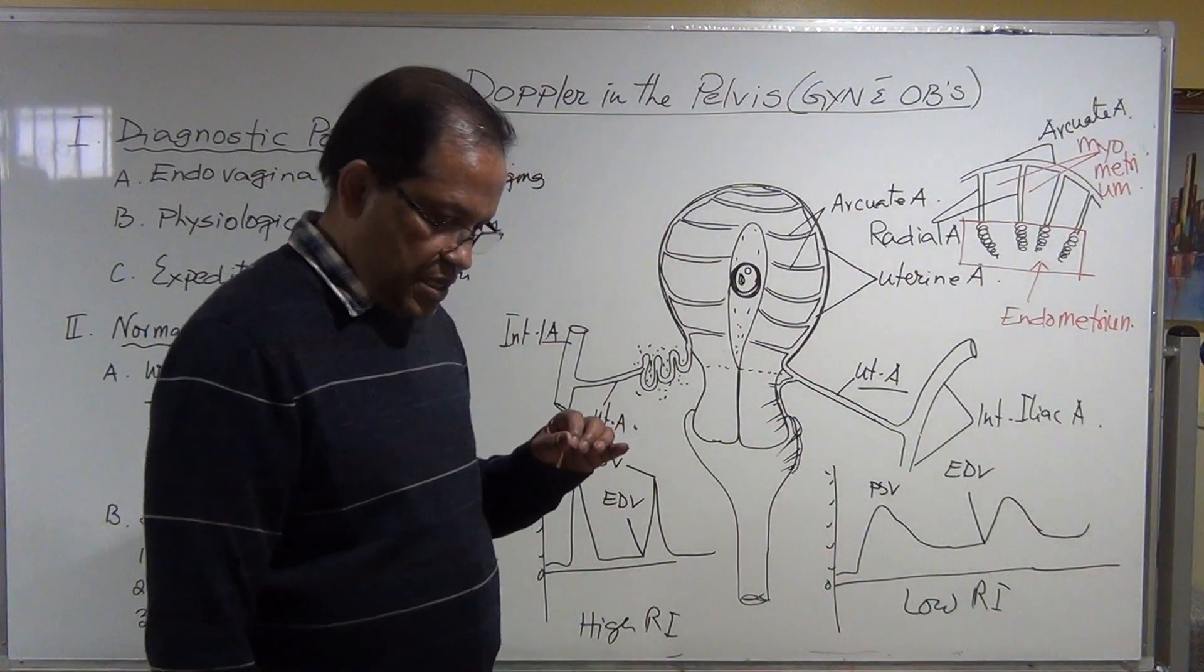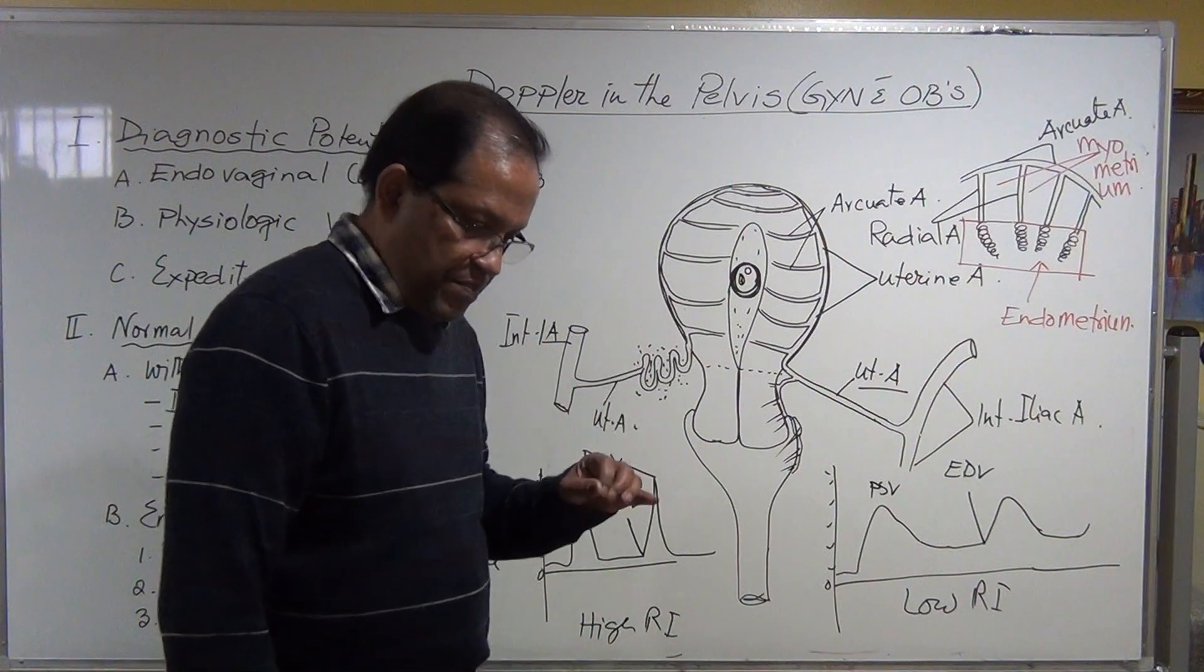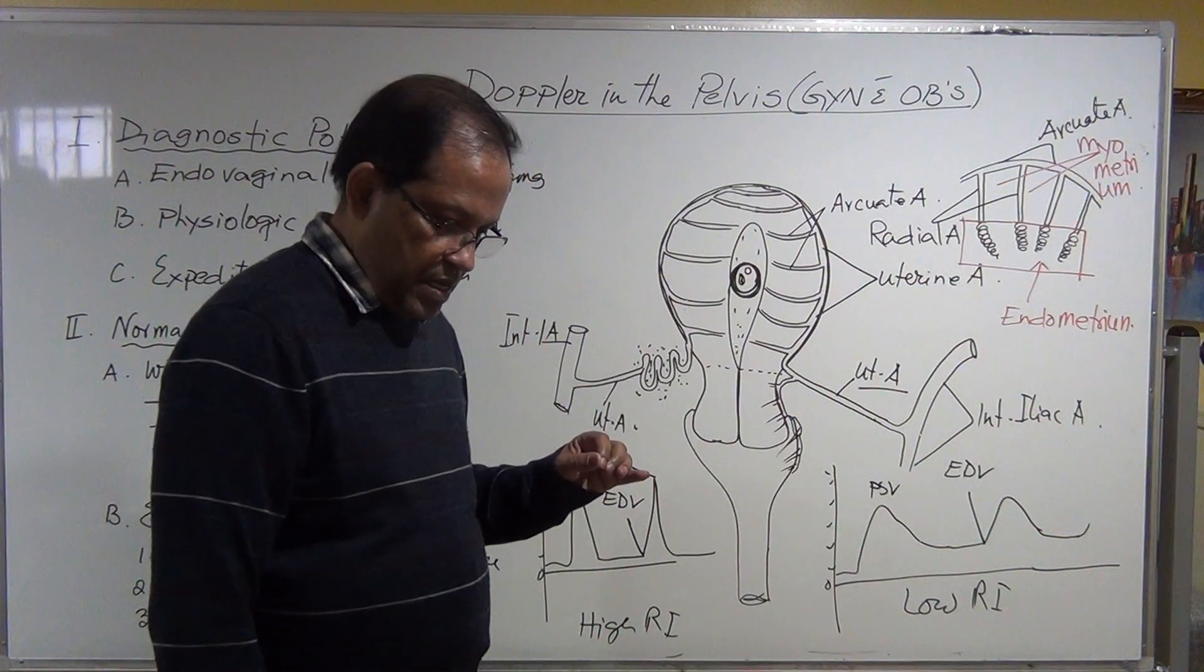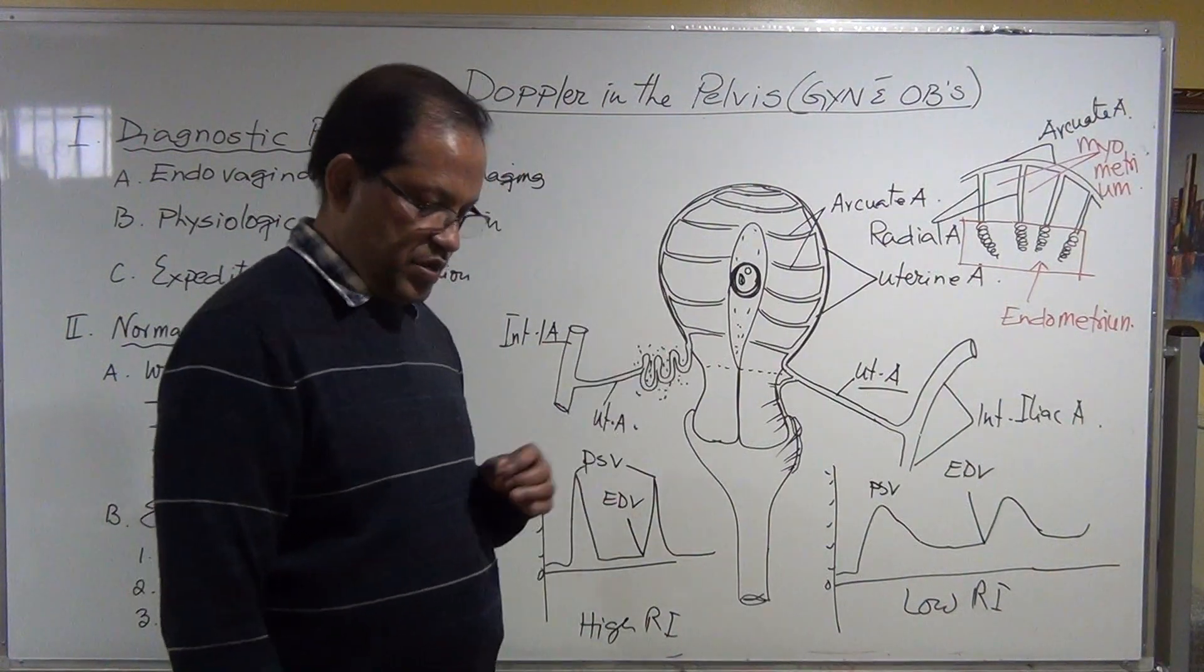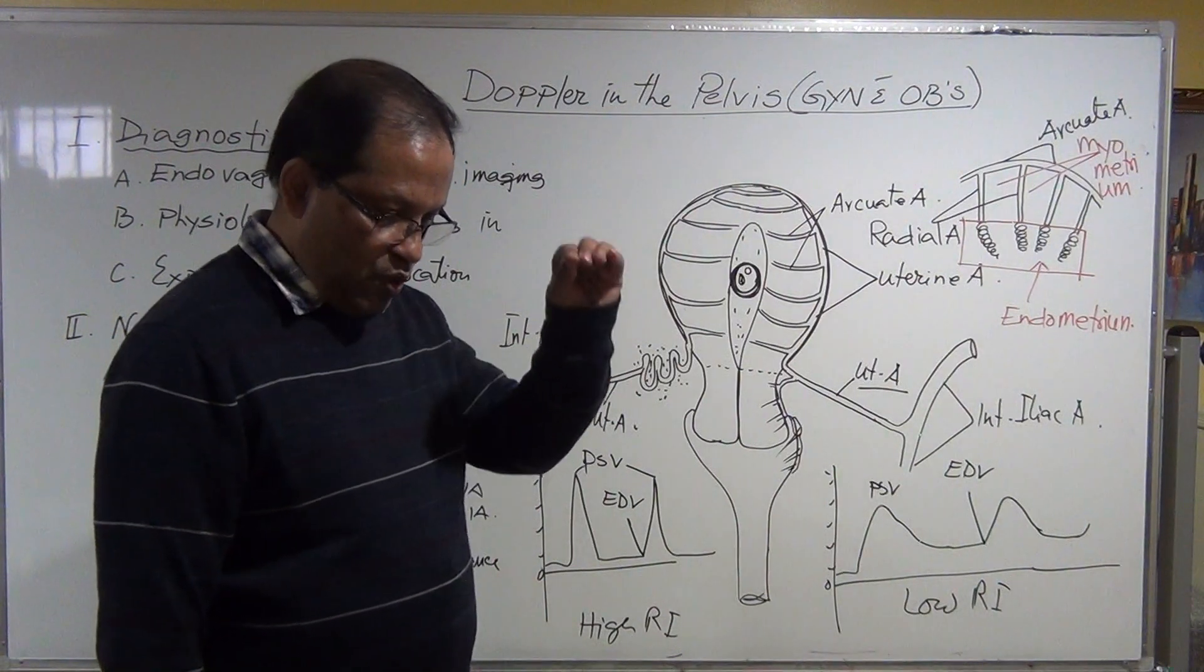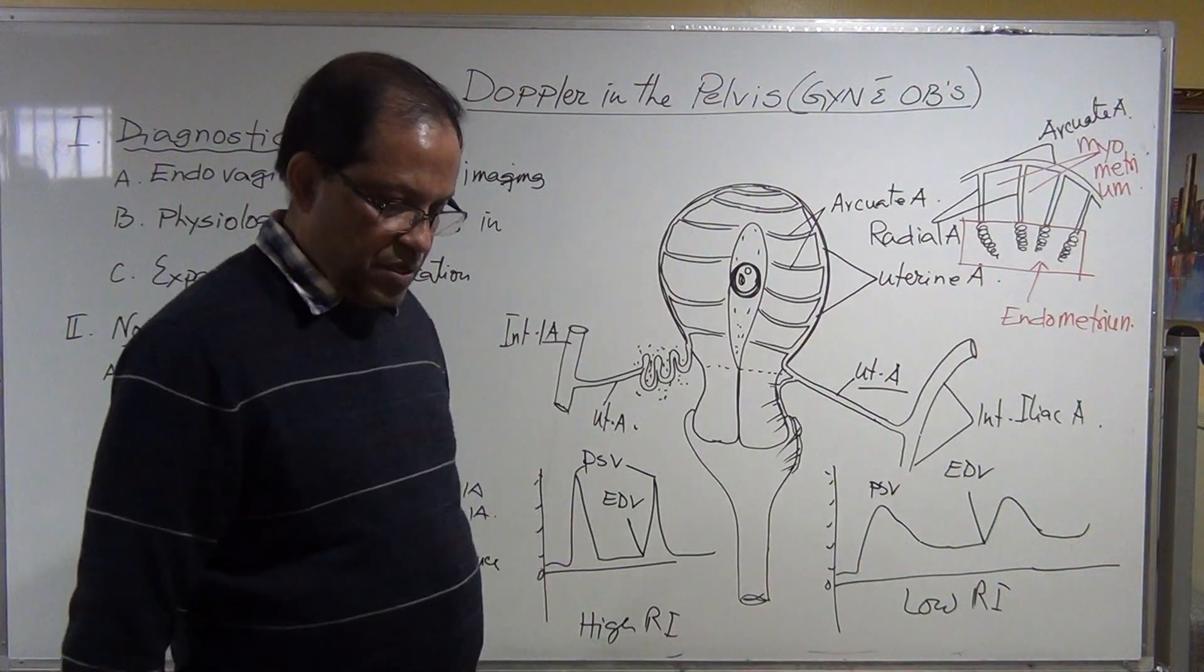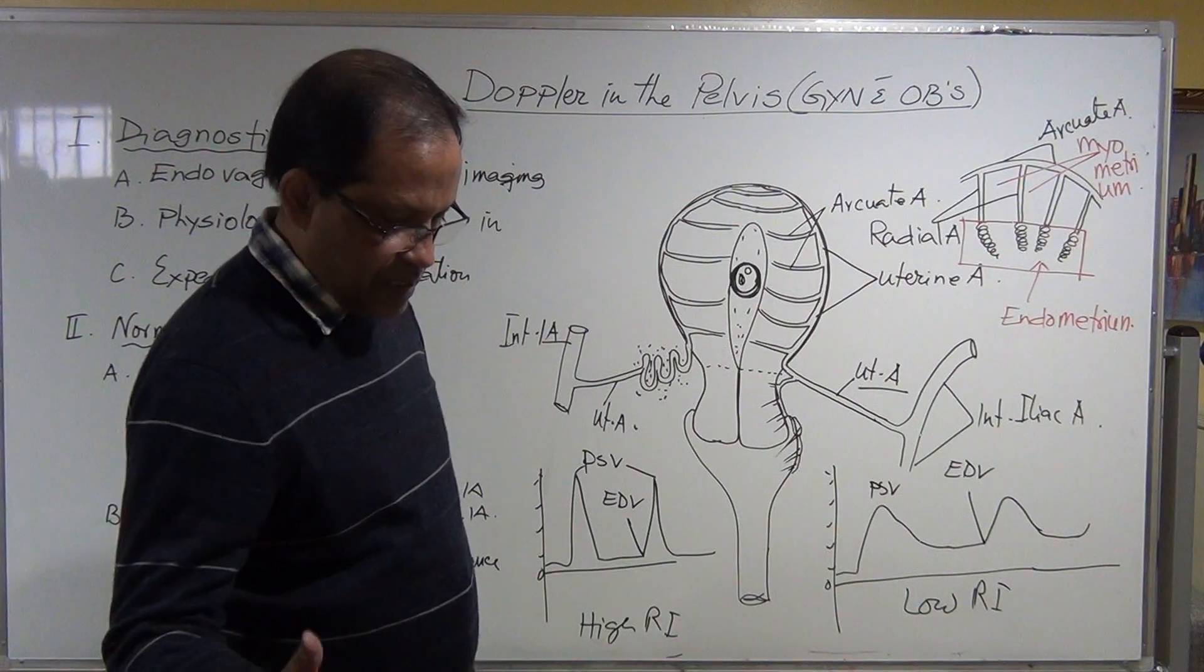Sometimes we have to understand during the advanced pregnancy, second and third trimester, they need more blood supply than the first trimester, so resistivity index will be more lower during the third trimester.